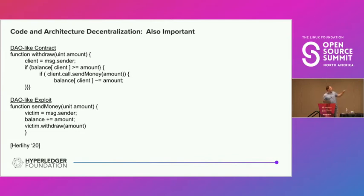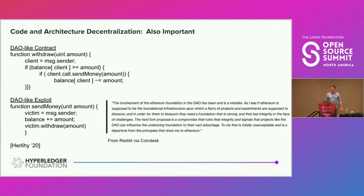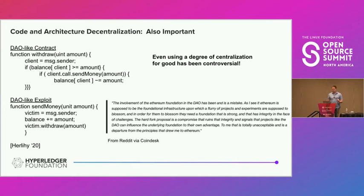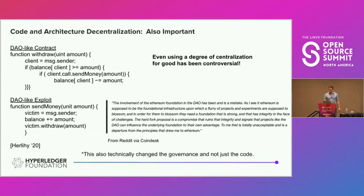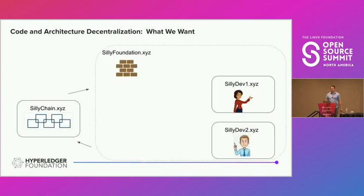People are probably familiar with the Ethereum DAO attack. Even using a degree of centralization — when the DAO attack happened, the Ethereum Foundation quickly pushed out an update and said everyone please get on board with this fix. This caused a lot of controversy, even though it was arguably doing a good thing and disincentivizing large system attackers.